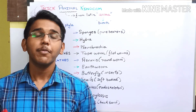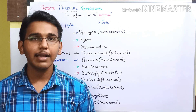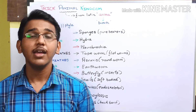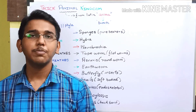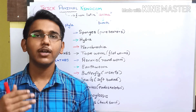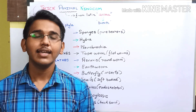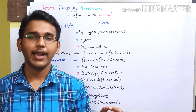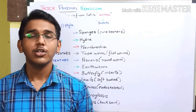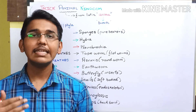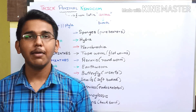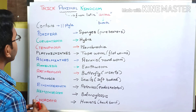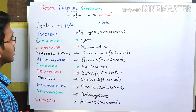Now let us discuss basic information about the 11 phylums present inside the animal kingdom with examples. Please don't skip the video because we are going to provide images of examples of each phylum on screen so that you can easily memorize the names.